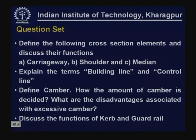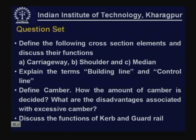Review questions related to today's topic: Define the following cross-section elements and discuss their functions — carriageway, shoulder, and median. Explain the terms building line and control line. Define camber and how the amount of camber is decided. What are the disadvantages associated with excessive camber? Discuss the functions of curb and guard rails. The answers to these questions will be discussed during the next lesson.